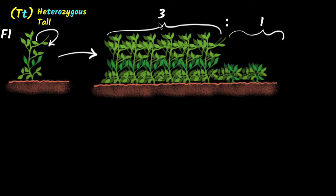But we get it in the ratio 3 is to 1. That means we get about 3 out of 4, that is 75% tall, and 1 out of 4, which is about 25% short. We will call this the F2 generation, the second generation over here.